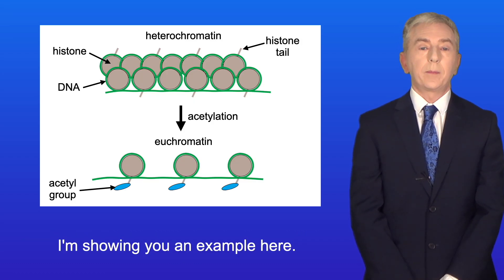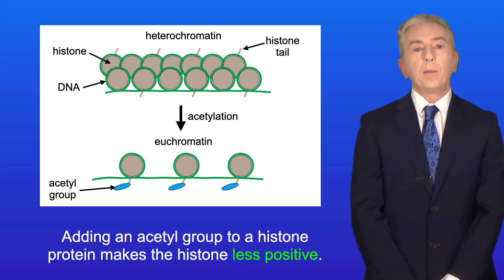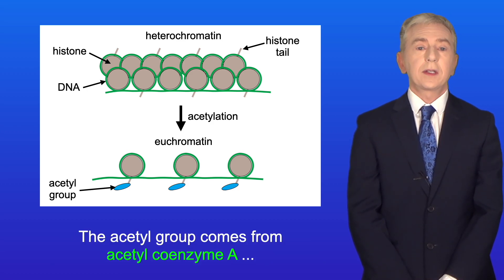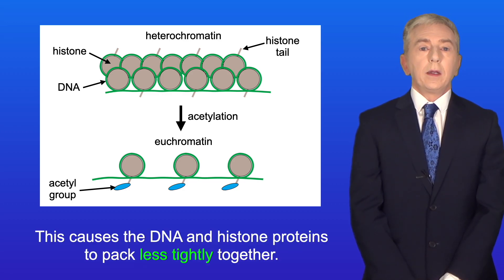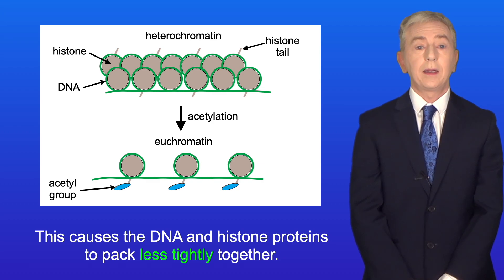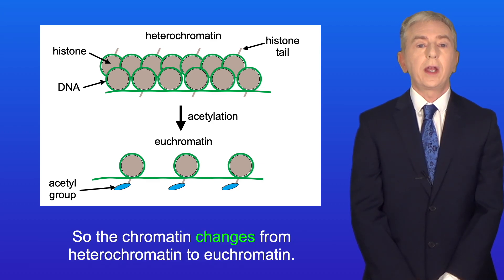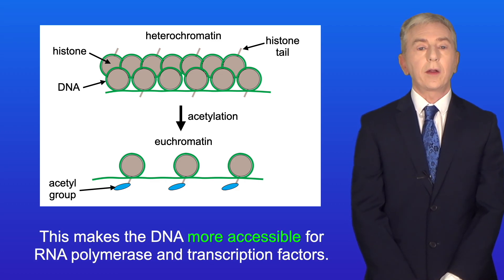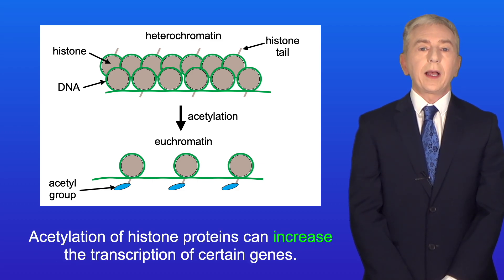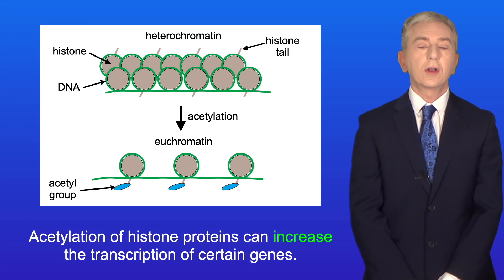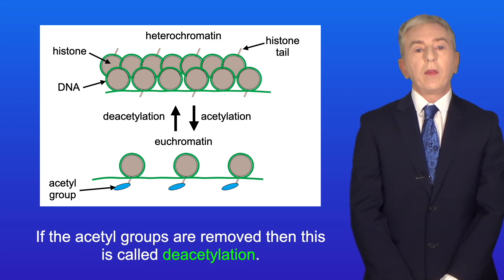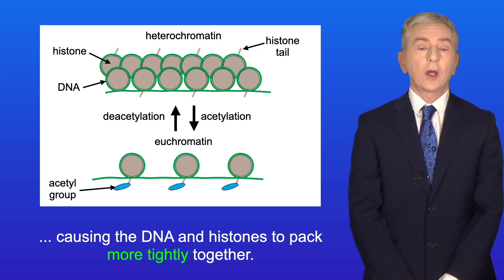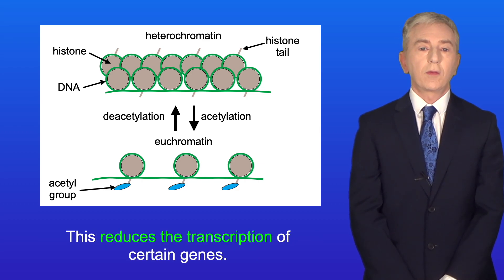Here is an example. Adding an acetyl group to a histone protein makes the histone less positive — this is called acetylation, and the acetyl group comes from acetyl-CoA, which we saw in the link reaction. This causes the DNA and histone proteins to pack less tightly together, so the chromatin changes from heterochromatin to euchromatin, making the DNA more accessible for RNA polymerase and transcription factors. So acetylation of histone proteins can increase the transcription of certain genes. If the acetyl groups are removed, this is called deacetylation, which has the opposite effect — causing the DNA and histones to pack more tightly together and reducing the transcription of certain genes.